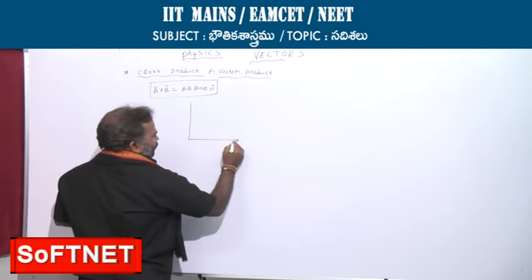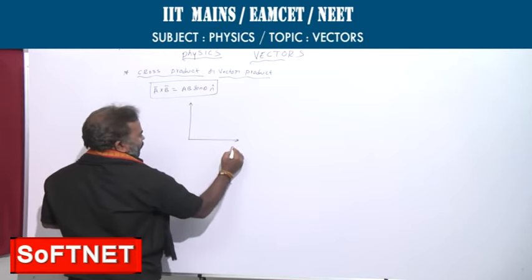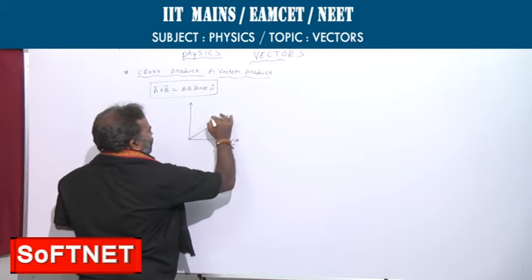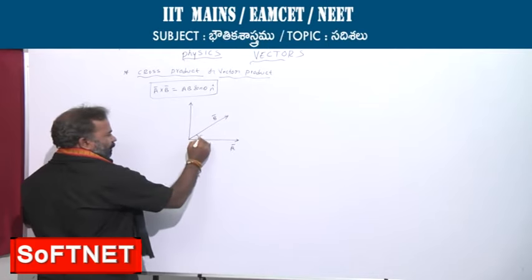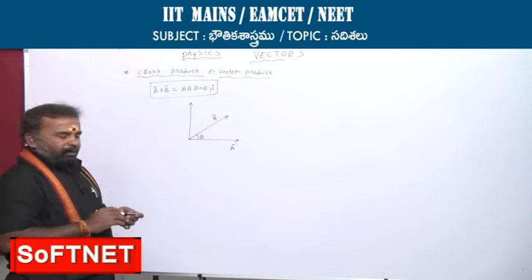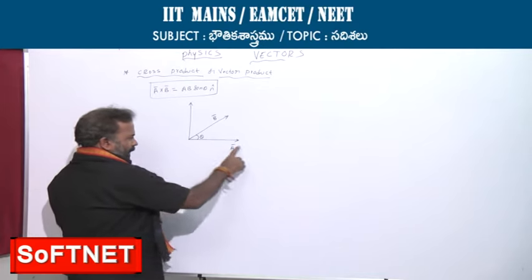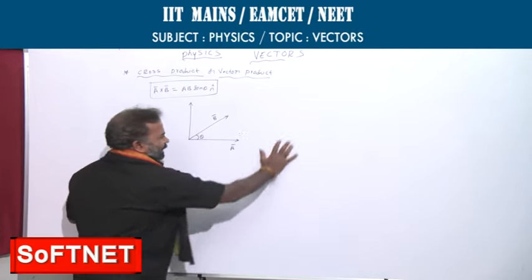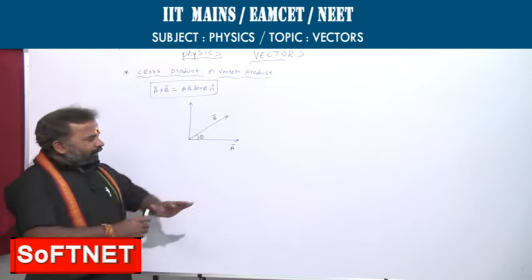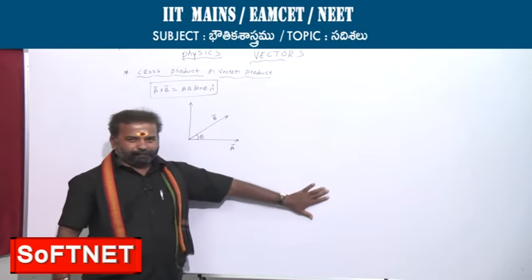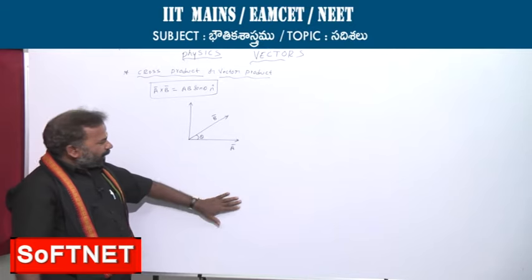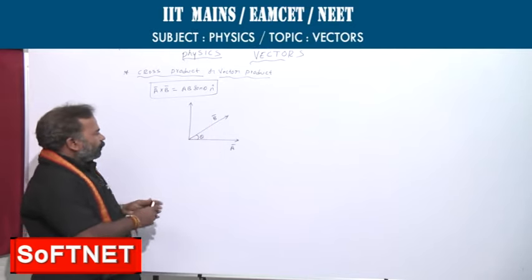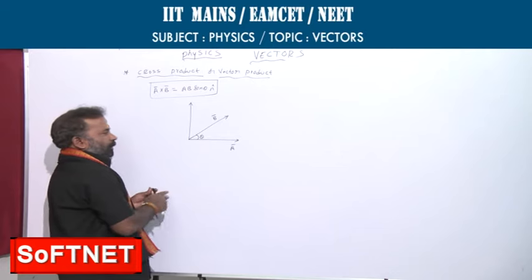Suppose if you take two vectors A bar and B bar with an angle theta between them. A bar and B bar are in the same plane. Let us assume the board is the plane. In this plane we have A bar and B bar. When you go for the cross product of these two vectors.